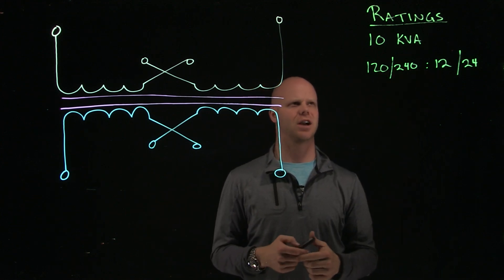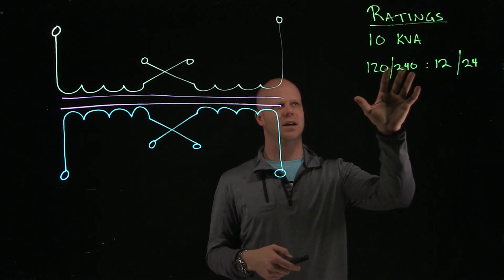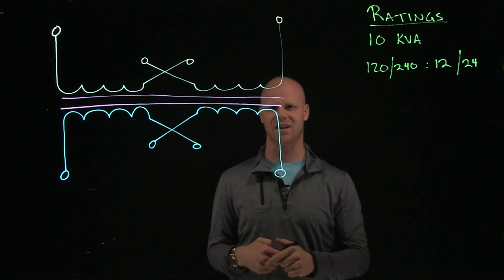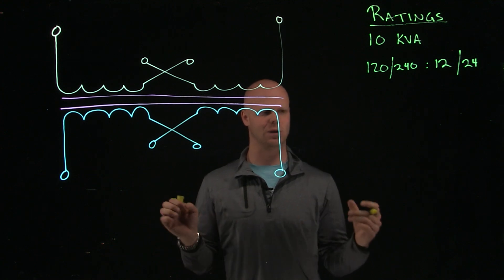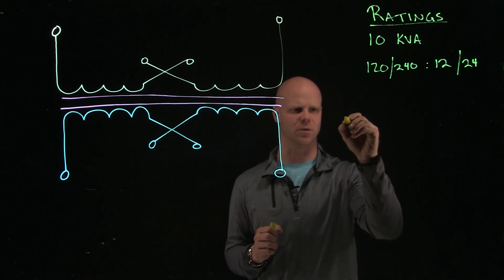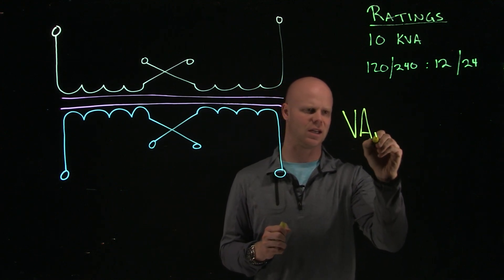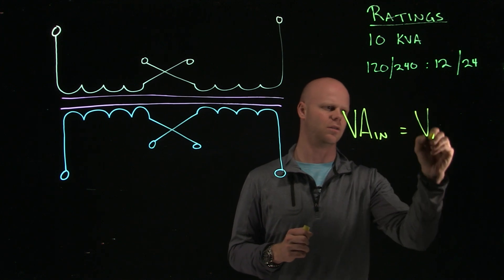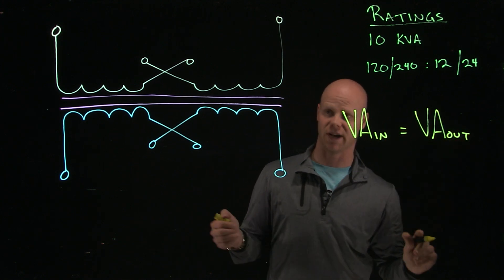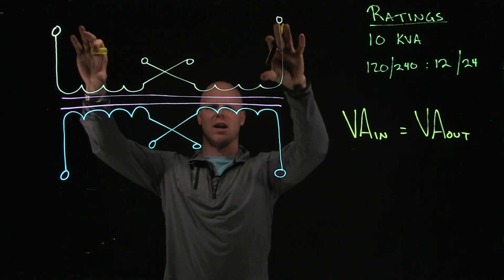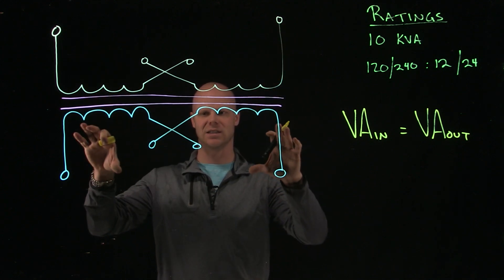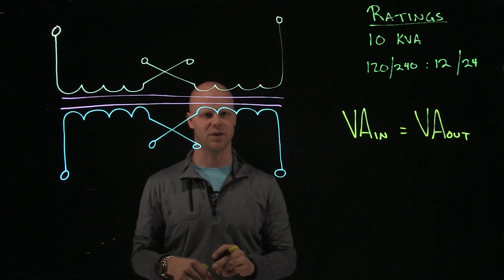So on the nameplate of my transformer, I look at how the transformer says it is a 10 kVA transformer. Well, if we ignore all the losses of a transformer, we know that VA in equals VA out. Fancy way of saying the VA rating of the primary side is identical to the VA rating on the secondary side.